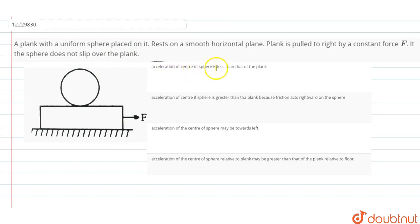Acceleration of the sphere is less than that of the plank. First part, the acceleration of my sphere is less than that of the plank. So the first option is acceleration of the center of the sphere is less than that of the plank. You will know that the friction will act at the back. What is mu N? So mu N is less than or equal to F.